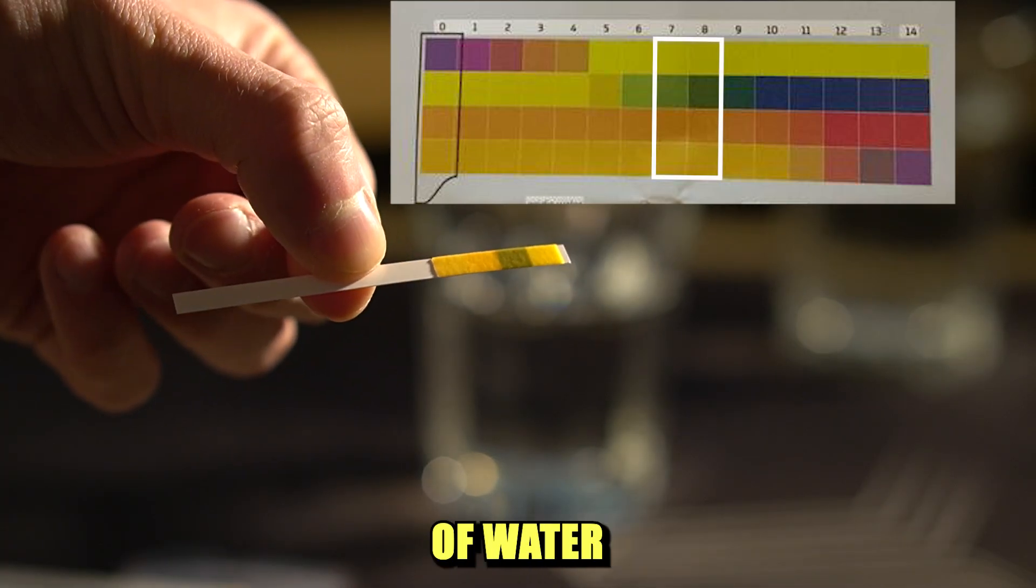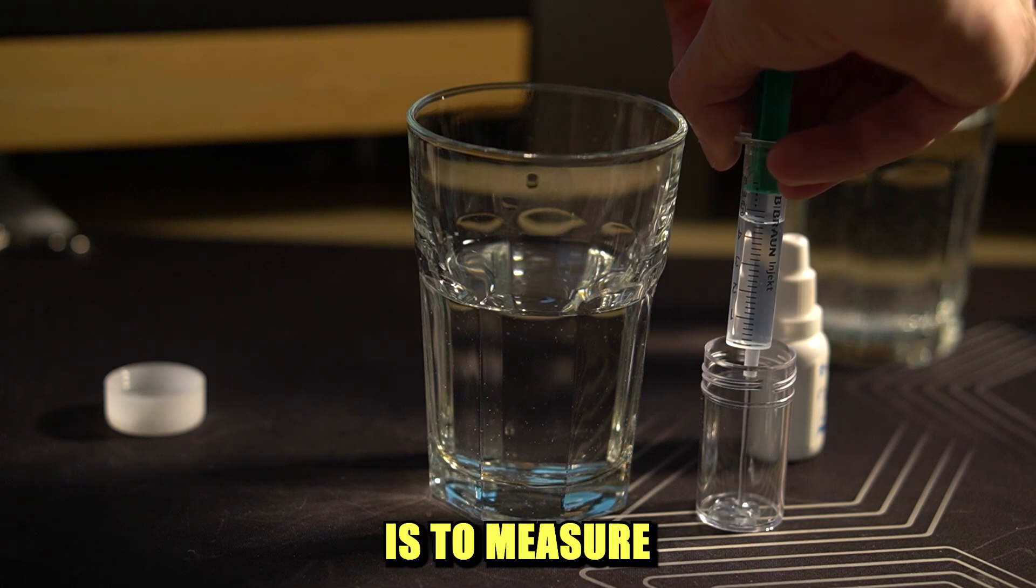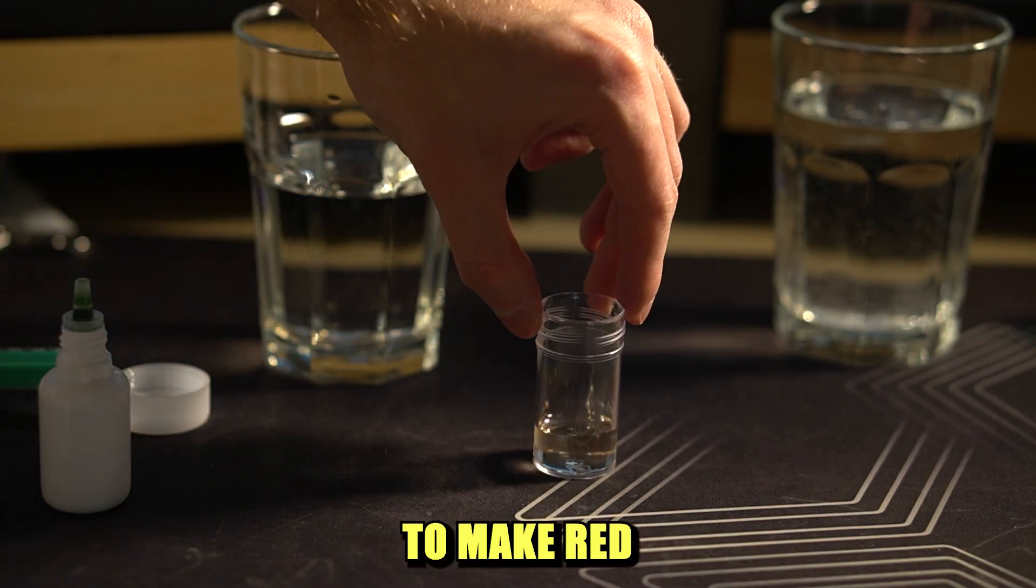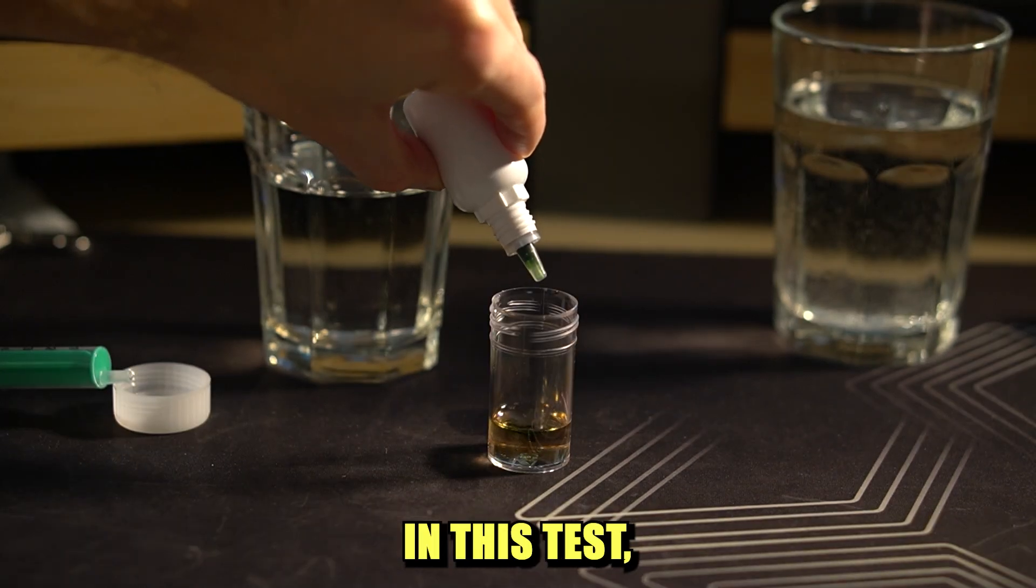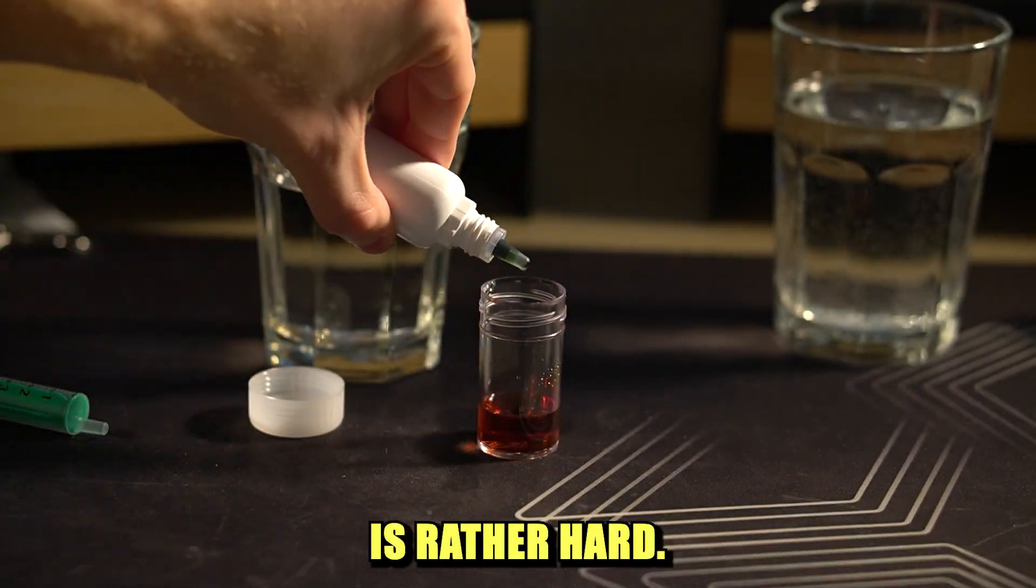And to make sure the hardness of water was measured correctly, here's the second test. The objective is to measure how many drops of the solution is needed to make red water green. In this test, I had to use 20 drops, which means the water is rather hard.